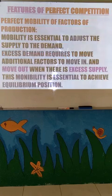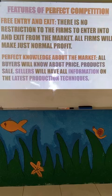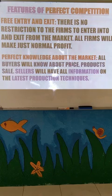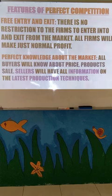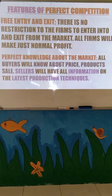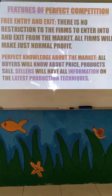Next is perfect knowledge. Perfect knowledge about the market means all buyers will know about the price of the products. Buyers have the perfect knowledge regarding what they need to know about products. At the same time, sellers will have all the information on the latest production technologies and regarding the products — sellers also will have perfect knowledge about production techniques and about the products.